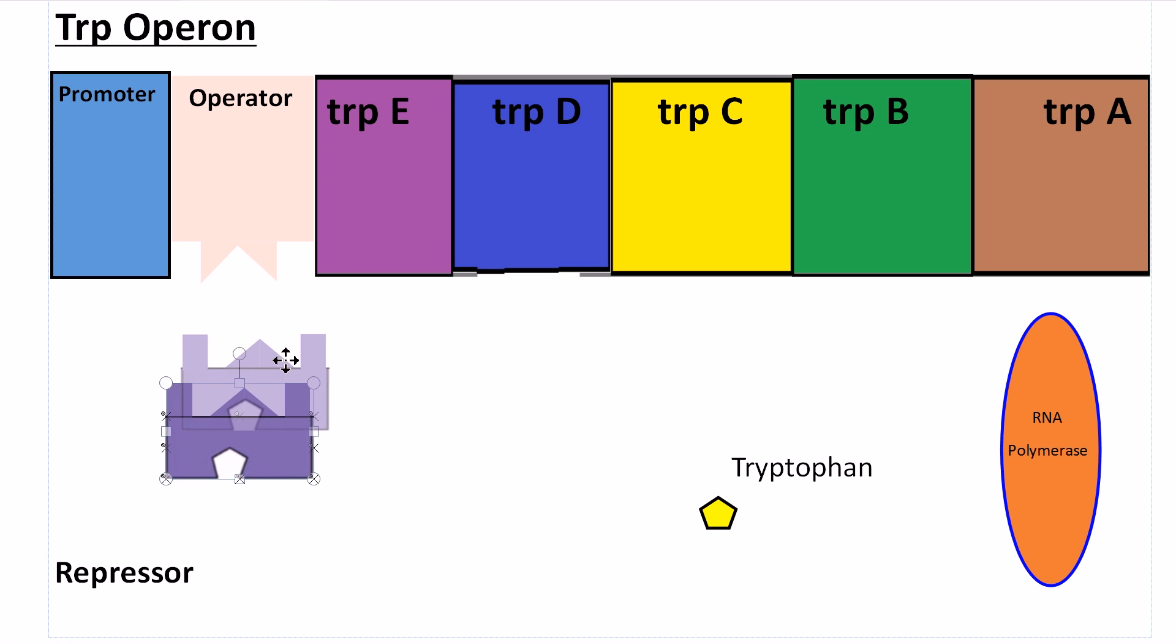With the presence of tryptophan in the cell, the tryptophan is going to fit inside the repressor, which then binds to the operator, setting the operator to the off position. The repressor is active.